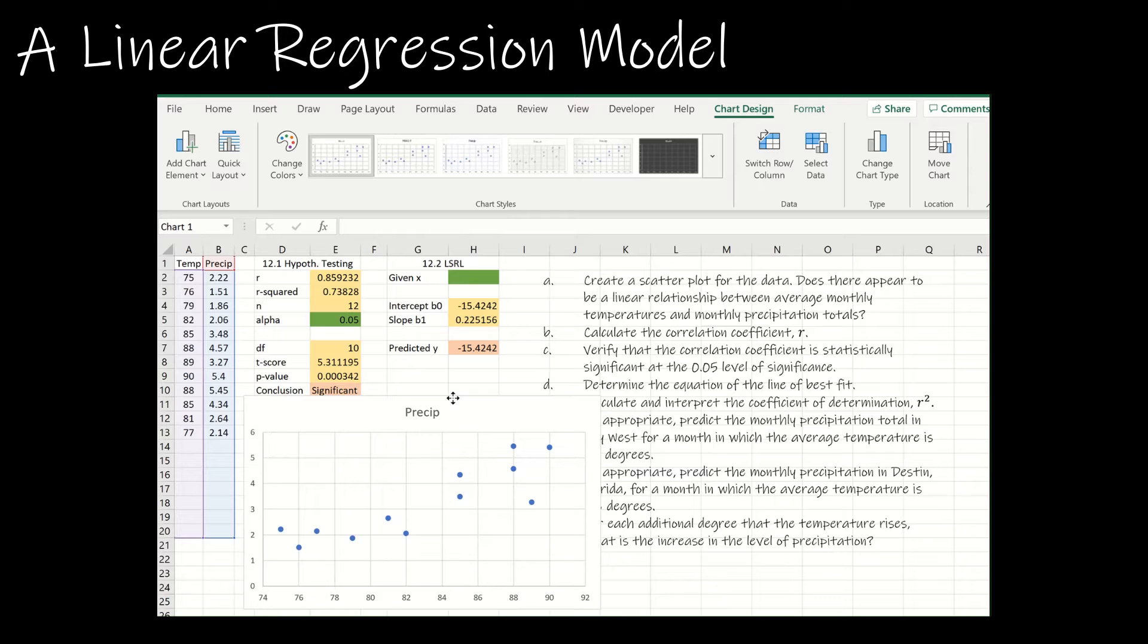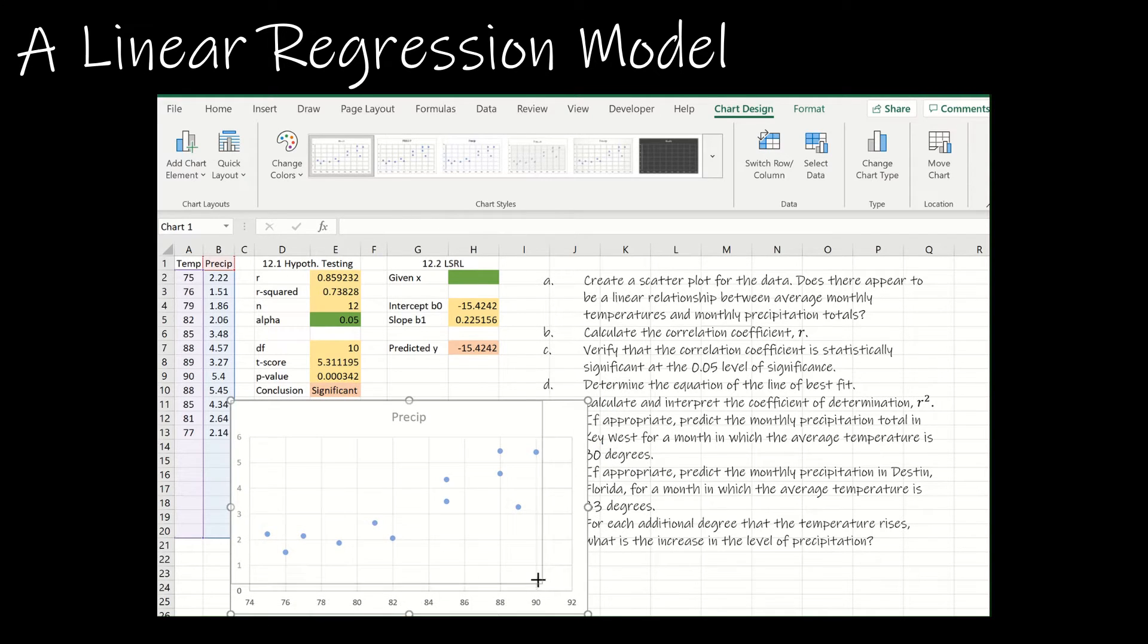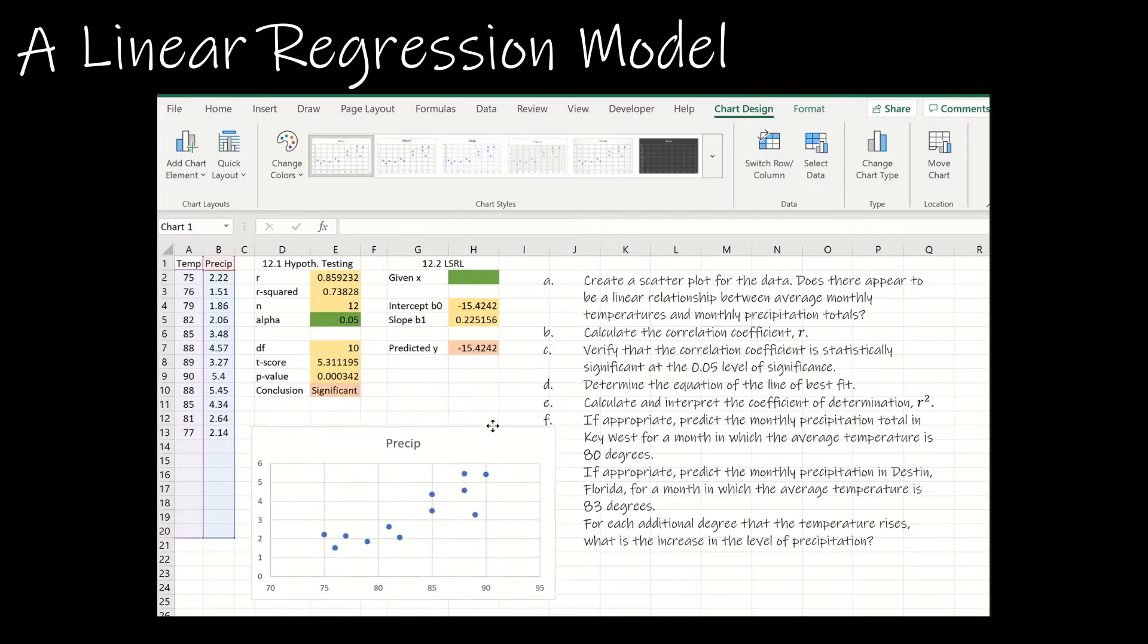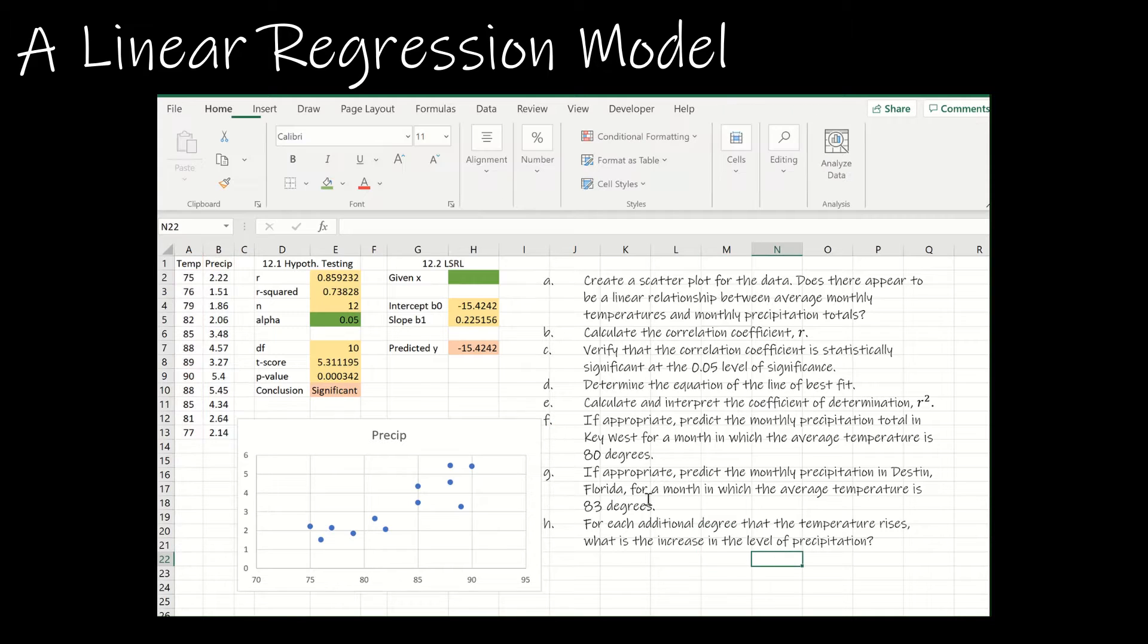Now, when I'm making a scatterplot for my own benefit, just to see if there's a relationship, I don't need to worry about changing the values for the axis labels or changing the title or anything like that. So if it was something I had to submit, I would be a little bit more involved. But for now, I'm just looking at does there appear to be a linear relationship? And yes, there appears to be a positive linear relationship.